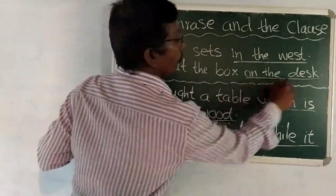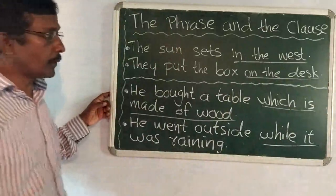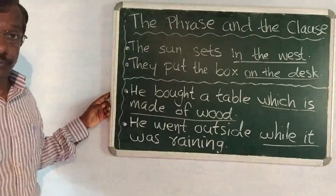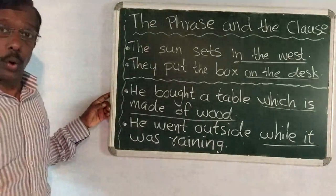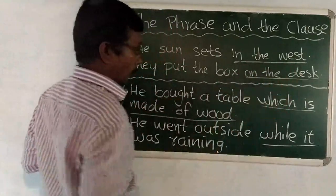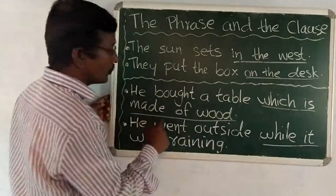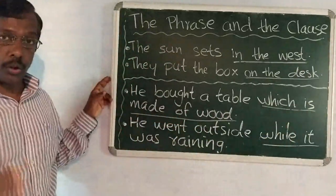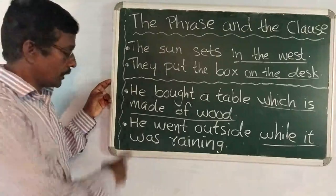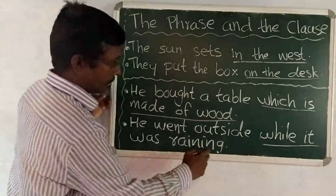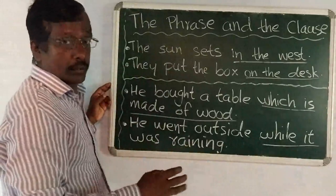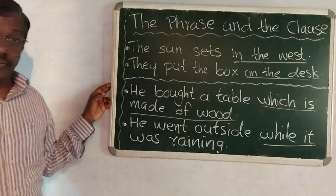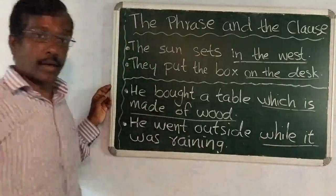To summarize: 'They put the box on the desk' — 'on the desk' is called a phrase. 'He bought a table which is made of wood' — 'which is made of wood' is a group of words with subject and predicate, so it is a clause. 'He went outside while it was raining' — 'while it was raining' has 'it' as subject and 'was raining' as predicate, so it is a clause.